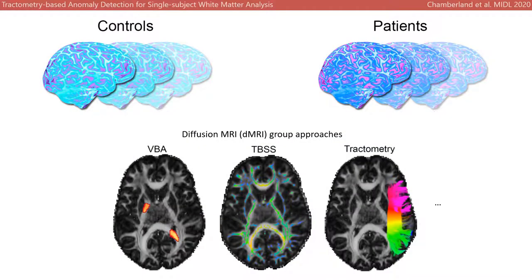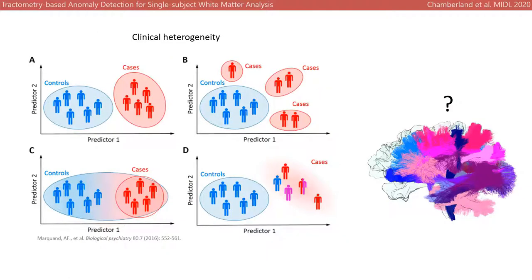Most clinical diffusion MRI studies rely on the statistical comparison between large groups of patients against healthy controls to study disease. However, group studies require a significant amount of patient data before analysis can be performed, and clinical heterogeneity can greatly challenge the discriminating power of these studies.